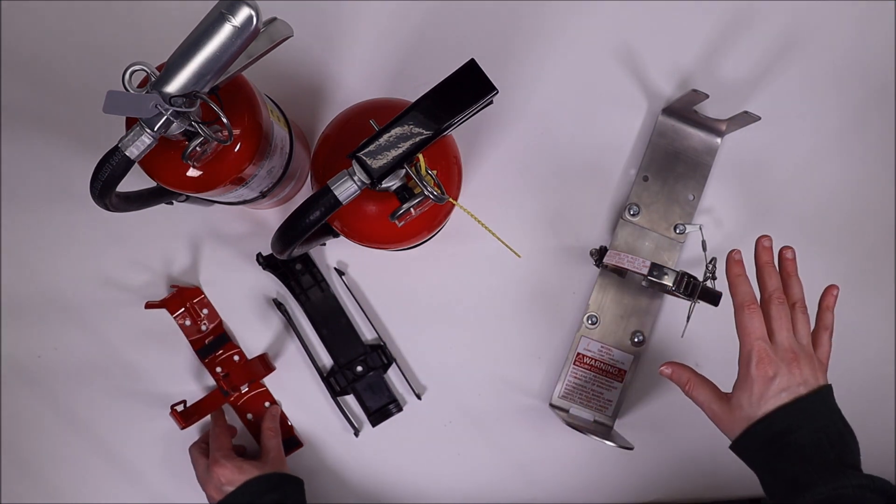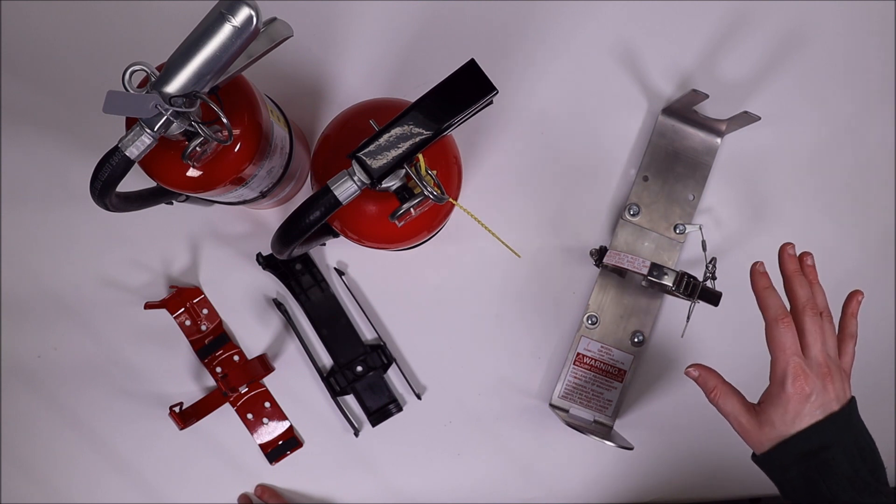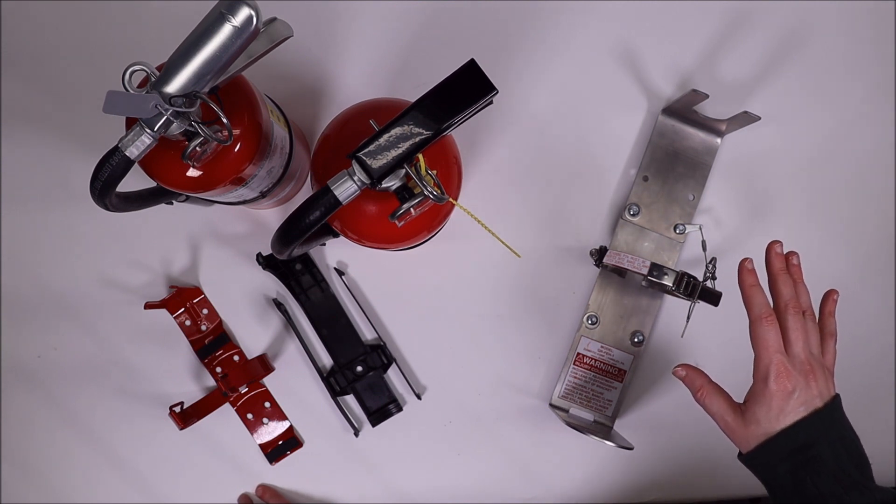This is our new fire extinguisher holder for five-pound extinguishers. This is model QR-FEH-1.